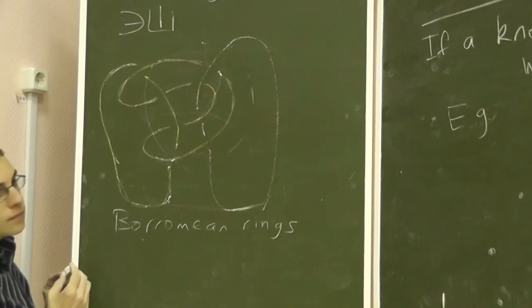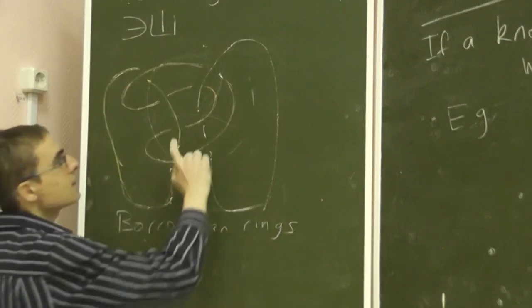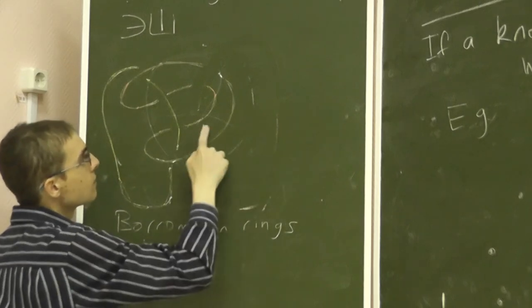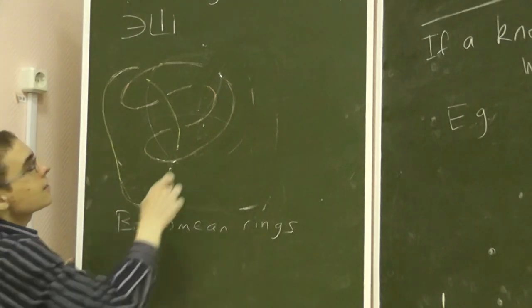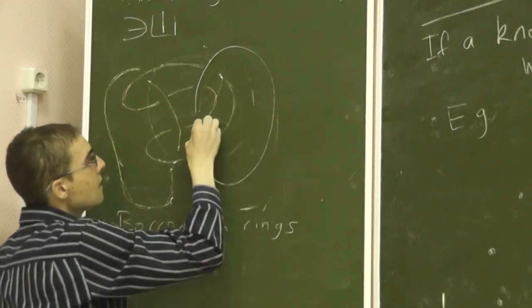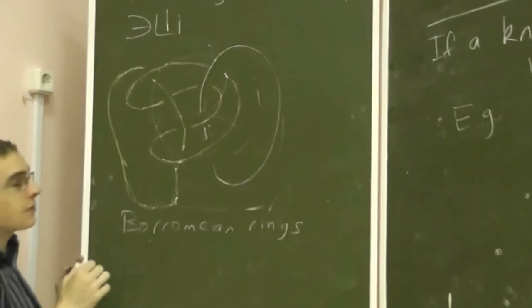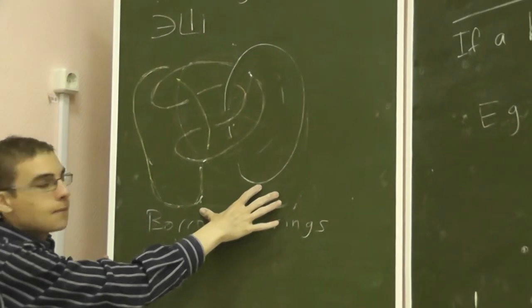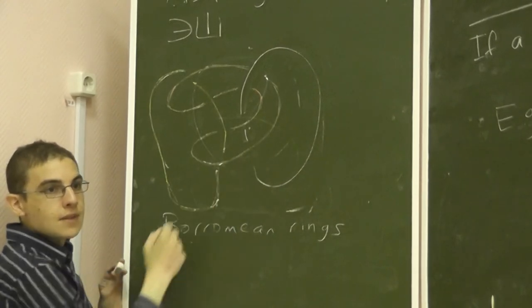But on the other hand, if I were to rub out one component, if I were to rub out the white, can I now pull apart the red and the yellow? Yes. And you might believe me if I say, if you rub out the red, then you can pull apart these two. And if you rub out the yellow, then you can pull apart these two. Can you see that? Yes.